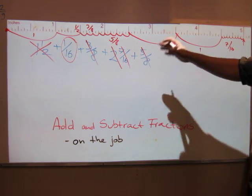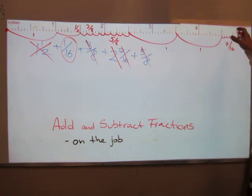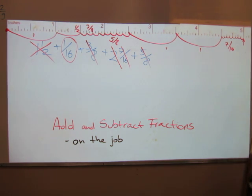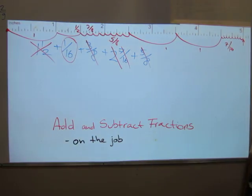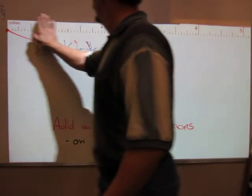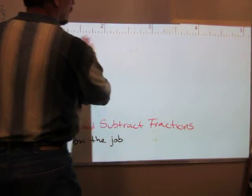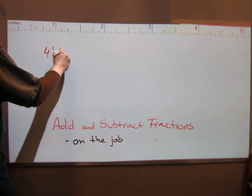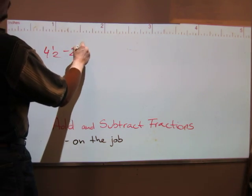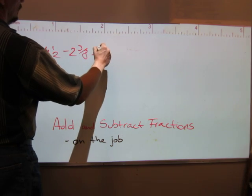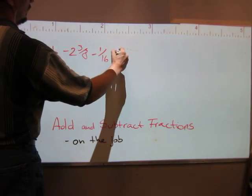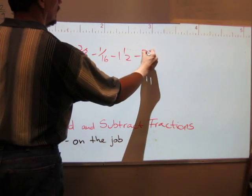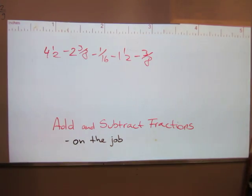Now let's take a look at a fraction subtraction problem using the tape measure. We'll subtract from 4 and a half: subtract 2 and 3 eighths, then subtract 1 sixteenth, then subtract 1 and a half inches, and finally subtract an additional 3 eighths of an inch.